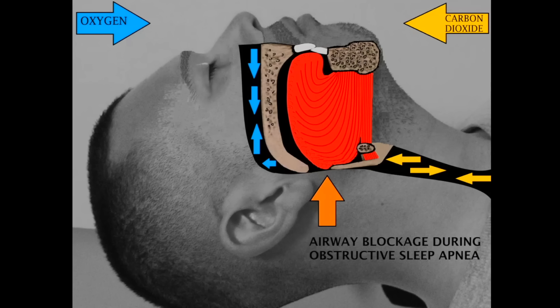First, what is sleep apnea? Here we have a cross-section of someone who is sleeping. We know that when we're breathing, oxygen needs to go in and carbon dioxide needs to come out. But as we get older, particularly in men, our tongues start to fall backwards and can obstruct this area. That can cause a problem with no breathing at night — this is known as obstructive sleep apnea. Even though the lungs are trying to take a breath in, the air does not get in.